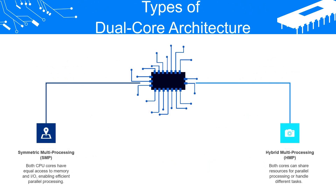Dual core architecture is a type of computer processor architecture that utilizes 2 separate physical CPU cores on a single chip. This design provides several advantages over single core processors, such as increased processing power and improved multitasking capabilities. There are 2 types of dual core architecture: Symmetric Multiprocessing (SMP) and Heterogeneous Multiprocessing (HMP).